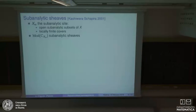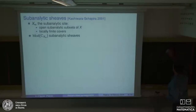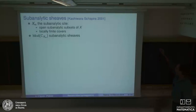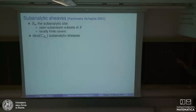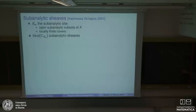Sub-analytic sheaves can be reconstructed as the category of ind-objects with values in the category of constructible sheaves — sheaves constant along a sub-analytic stratification, compactly supported. So sub-analytic sheaves can be realized as ind-limits of usual constructible sheaves. More generally, one can speak about ind-sheaves, dropping the sub-analytic condition.